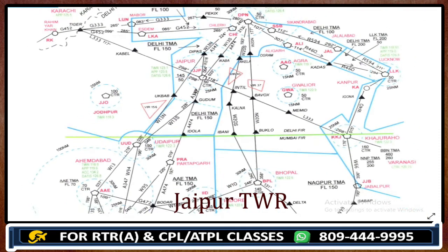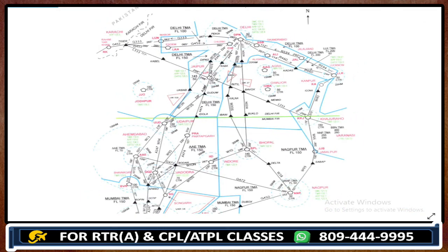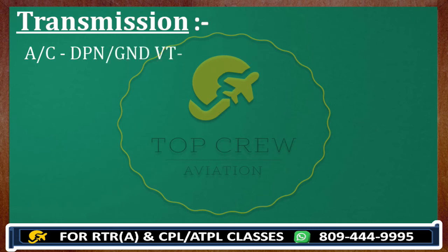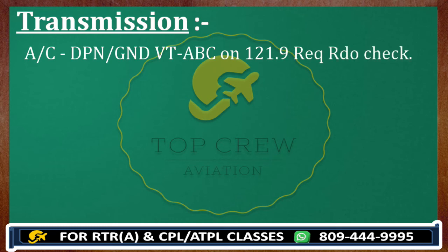For example, checking over Delhi Papa November: 'Delhi ground, Victor Tango Alpha Bravo Charlie, Delhi ground, this is Victor Tango Alpha Bravo Charlie on 121.9, request radio check.' The frequency 121.9 is taken from the chart written in front of the SMC entry. This is how you make a call to the concerned ATC.